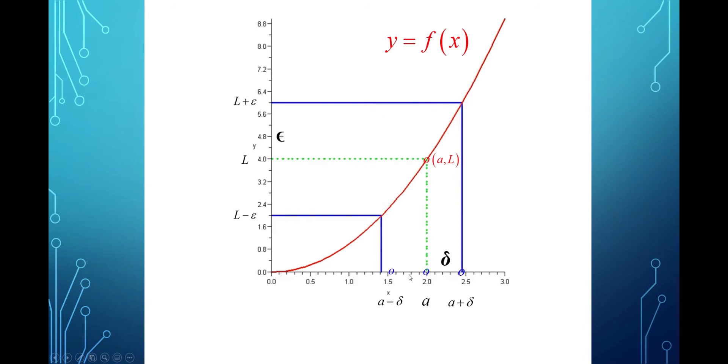then the limit as x approaches a of f(x), if it equals some number l, then what has to be true is you can pick this number epsilon and make it as close to zero as you like. So that an interval on the y-axis from l minus epsilon to l plus epsilon could be really small around l.